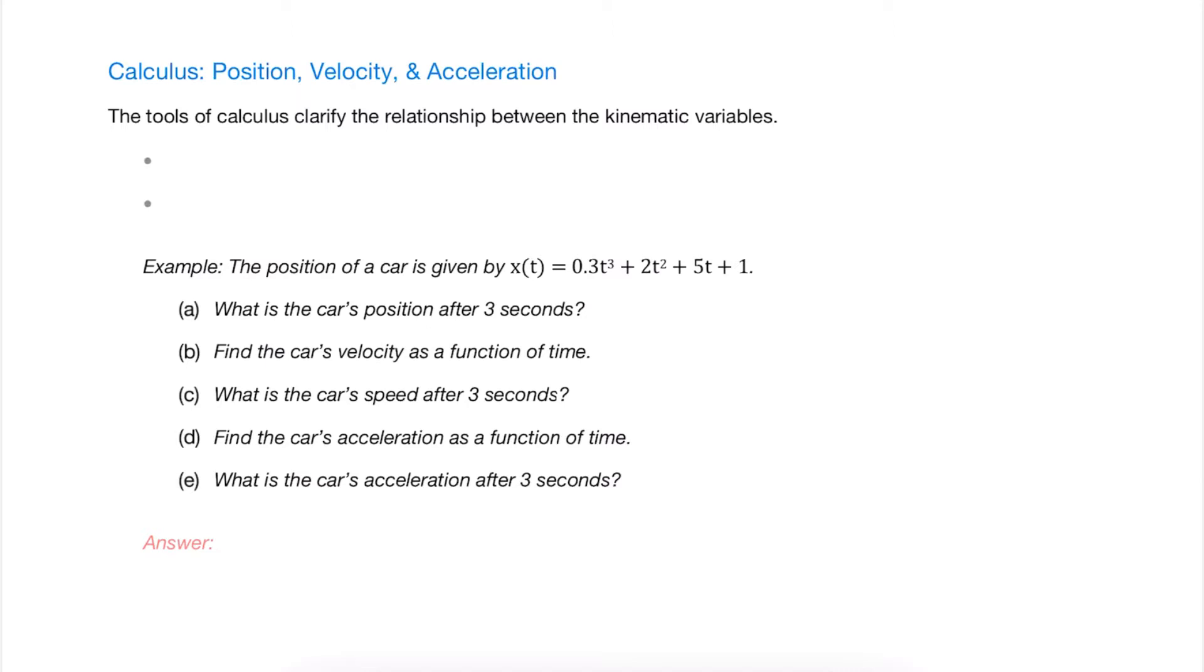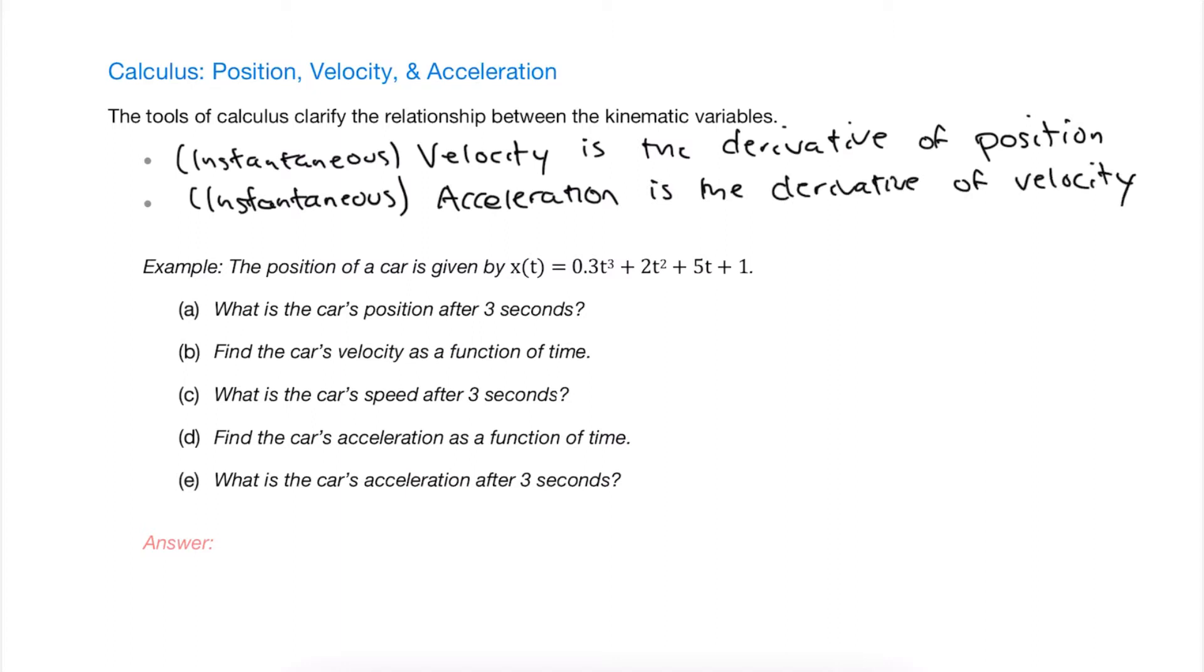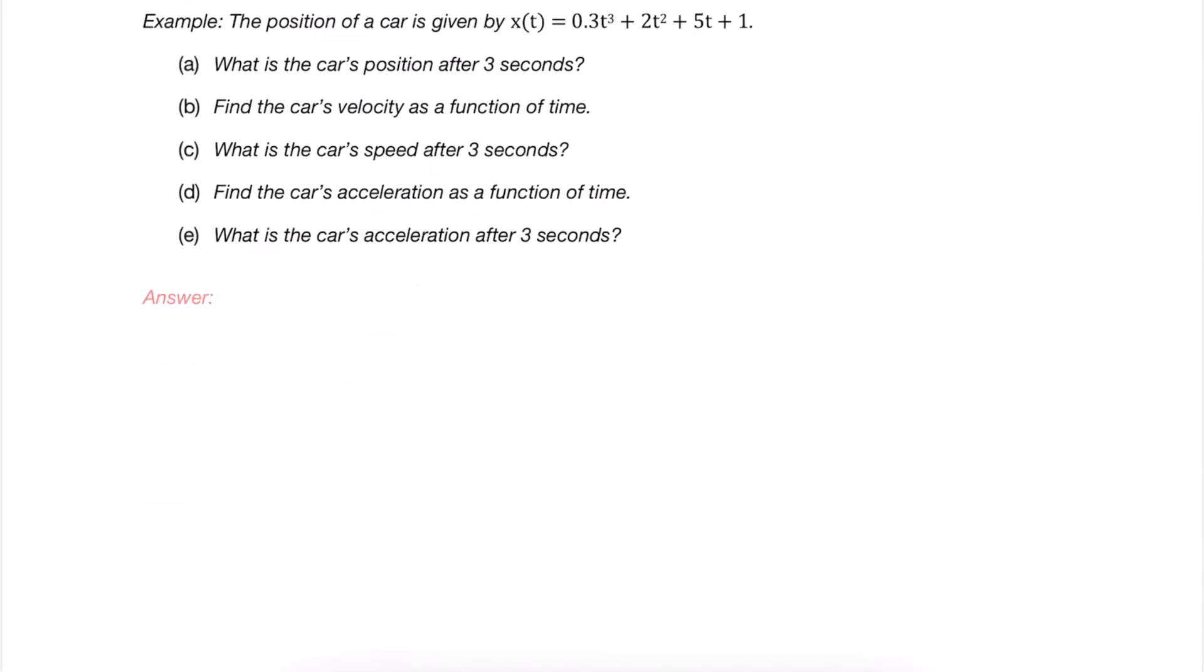To begin with, we start looking at how they are connected. The first observation is that the instantaneous velocity is simply the derivative of position, and the instantaneous acceleration is the derivative of velocity. This connection through calculus is going to make clear some of the relationships that we've seen thus far. So let's go ahead and look at this in this example.